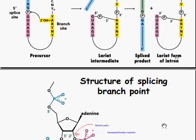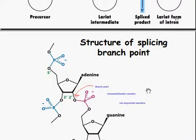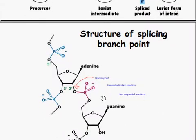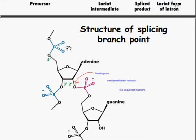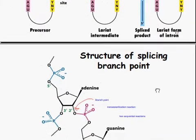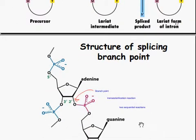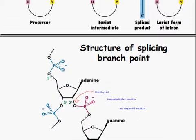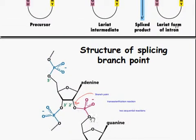At the branch point, there's trans-esterification, as just described. That branch point causes two sequential reactions, which are attacked right there at the branch point.